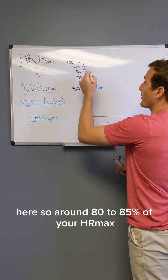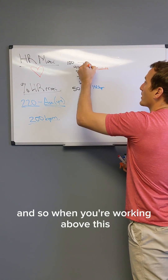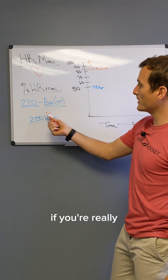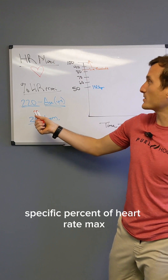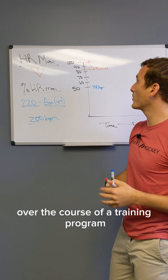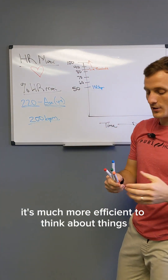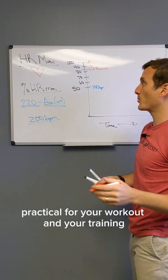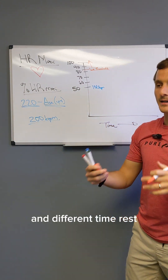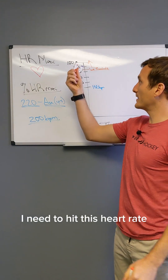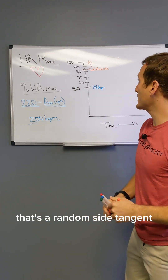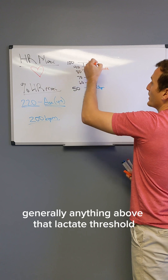You're usually going to hit that aerobic-anaerobic threshold around 80 to 85% of your heart rate max — this is called the lactate threshold. Working above this, more than likely you're anaerobic. As a side note: if you're really worried about hitting a specific percentage of heart rate max, it's more practical to think in terms of energy systems — lactate threshold, tolerance, and work-to-rest intervals — rather than chasing a heart rate number, since heart rate gradually increases over a training session anyway.